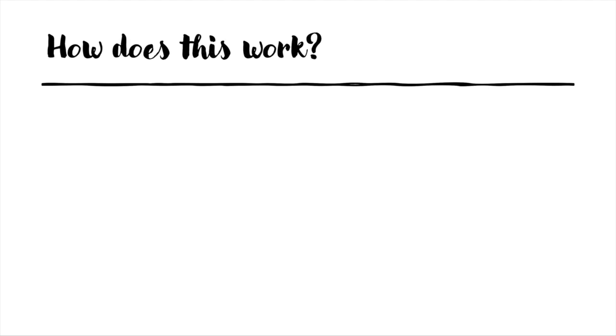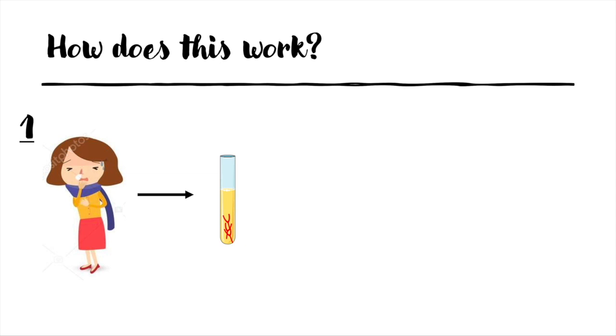There are three basic steps to perform a neutralization assay. One, you first take the serum of the infected patient, which contains the antibodies. Then we will make different dilutions of the serum, so we can see later in which dilution the antibodies still have a neutralizing effect.